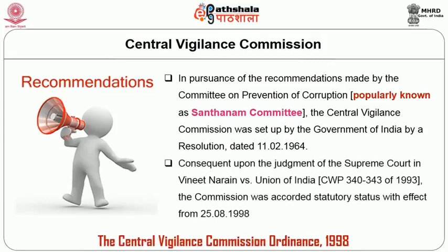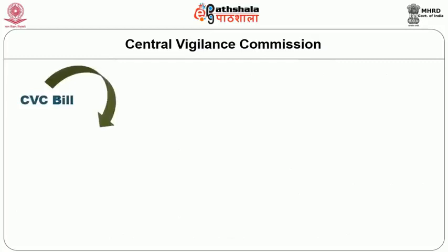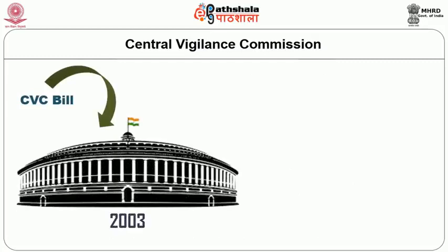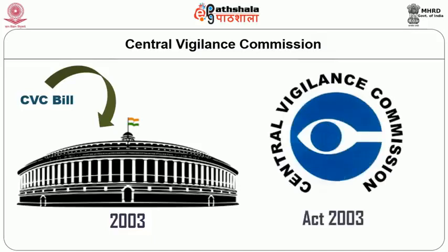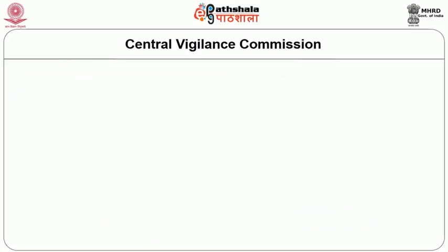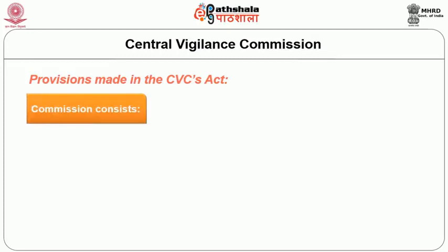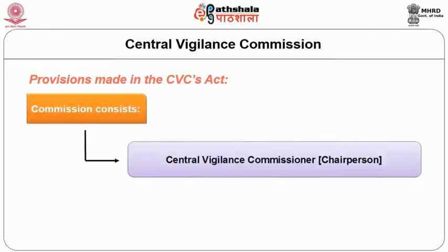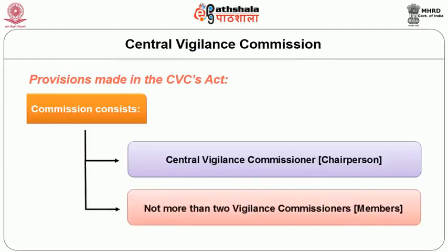Consequent upon the judgment of the Supreme Court in Vineet Narayan v. Union of India, the Commission was accorded a statutory status in 1998 through the Central Vigilance Commission Ordinance 1998. Subsequently, the CVC Bill was passed by both Houses of Parliament in 2003, and since then it has acquired statutory status under the Central Vigilance Commission Act 2003. As per the provisions of the CVC Act, the Commission consists of a Central Vigilance Commissioner, who is the chairperson, and not more than two Vigilance Commissioners, who are the members.